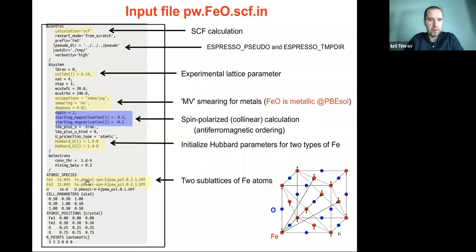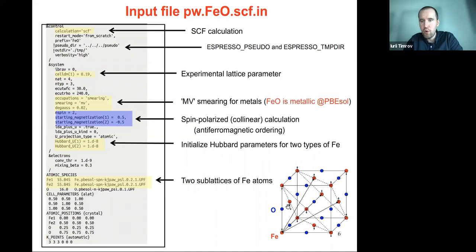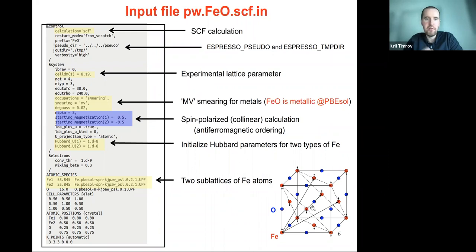We have two types of iron — Fe1 and Fe2 — and use PAW (projector augmented wave) pseudopotentials. We have two types because iron oxide has two sublattices shown as red and blue balls in the cartoon. Fe1 corresponds to spin-down atoms and Fe2 to spin-up atoms. So we specify two types of iron because of their different spin orientations.